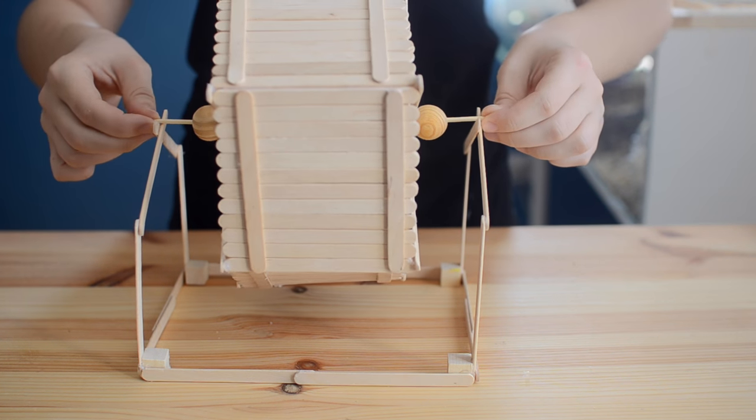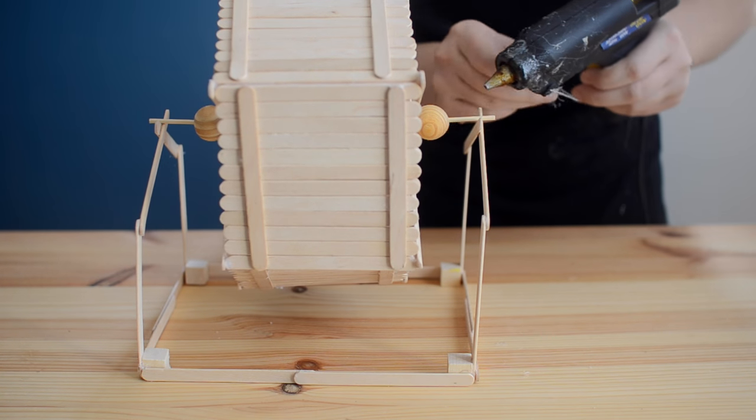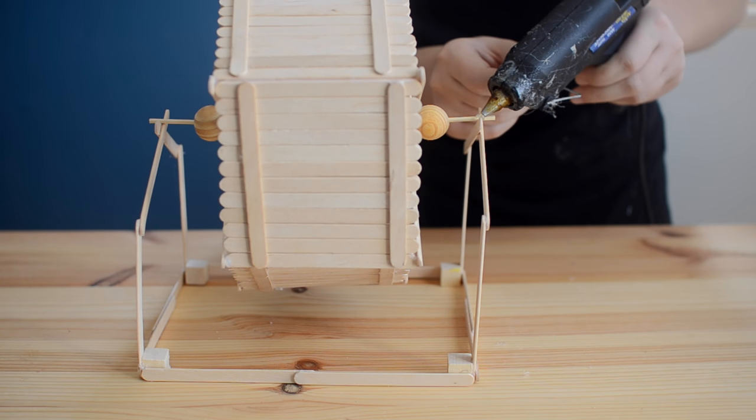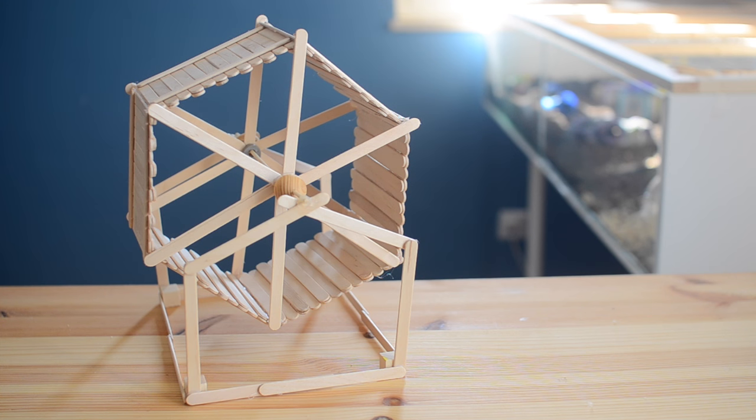The final step is to take your wheel and fit it onto the frame simply by placing the dowels into the little v-shape and adding a little bit of glue on there just to hold everything in place. And that ladles and jelly spoons is how you make a hamster wheel out of lolly sticks.